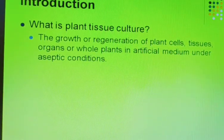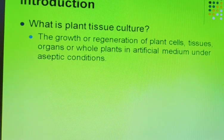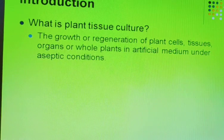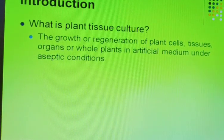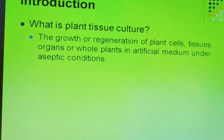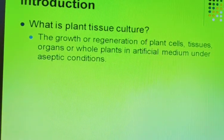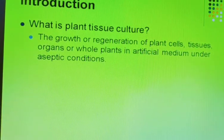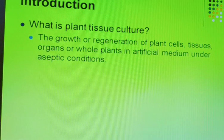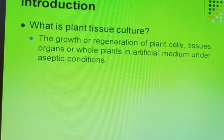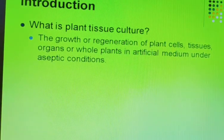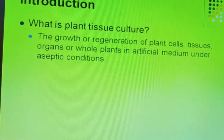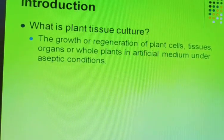In plant tissue culture, we try to grow the plant from an artificial medium under aseptic conditions. In the laboratory, we can use plant cells, tissues, organs, and other living parts of the plant. These parts can be inoculated into the artificial medium under aseptic conditions. That whole study or process is known as plant tissue culture.